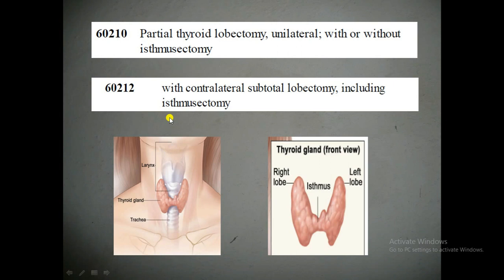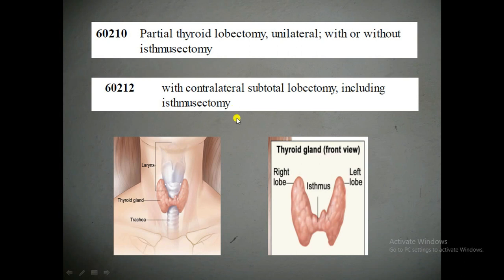The physician performs these procedures when patients have nodules in the thyroid region. Looking at the anatomy of the thyroid gland, if nodules are present in the lobes, the physician will perform lobectomy or isthmectomy procedures. These nodules can be benign or malignant — cancerous tissues such as follicular adenomas or Hürthle cell tumors. To remove them, the physician performs partial or total thyroid lobectomy depending on where the nodule is formed.